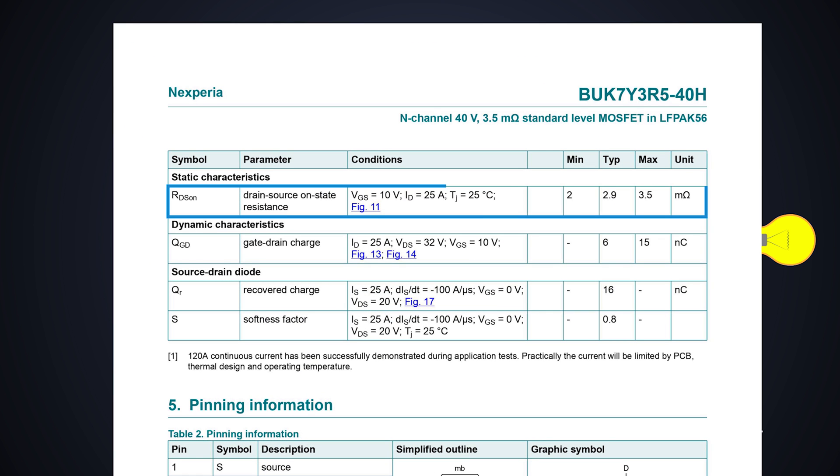This is the RDS(ON) for this MOSFET with the condition of VGS should be 10V, drain current should be only 25A and the junction temperature of the MOSFET is 25 degrees Celsius.